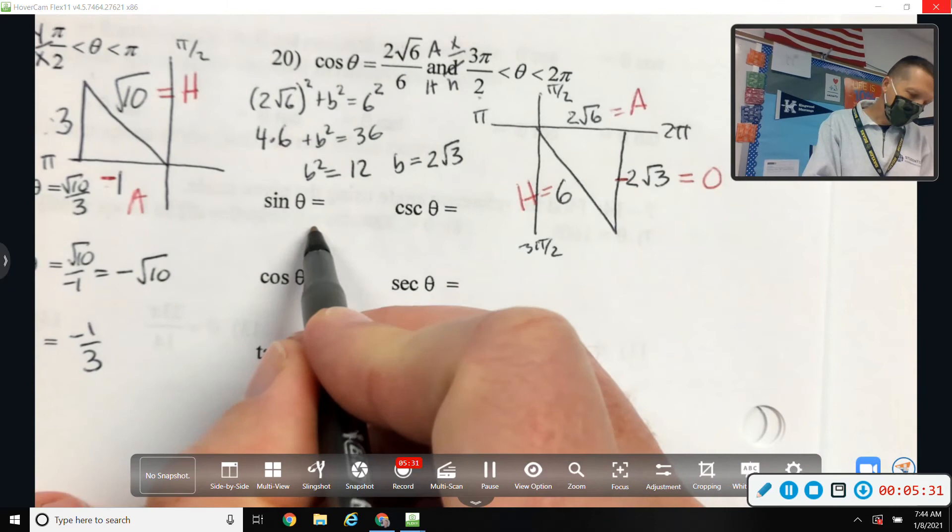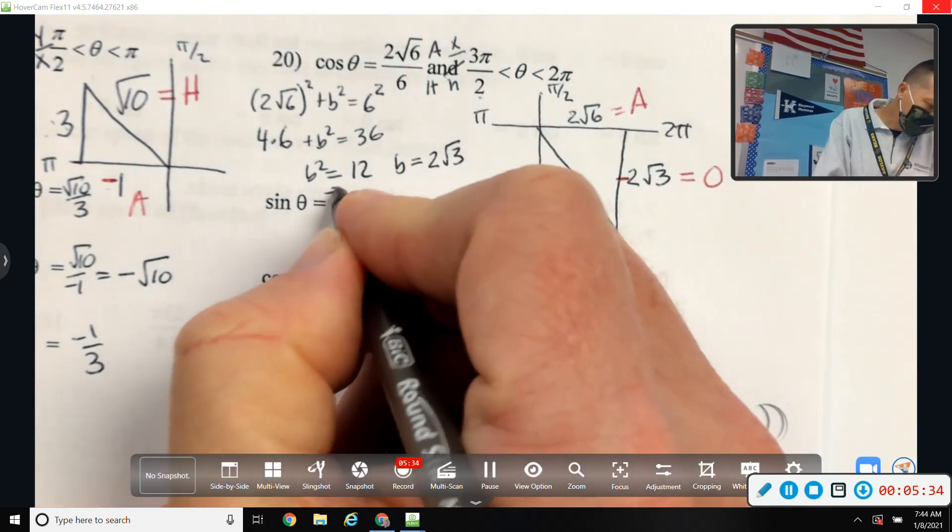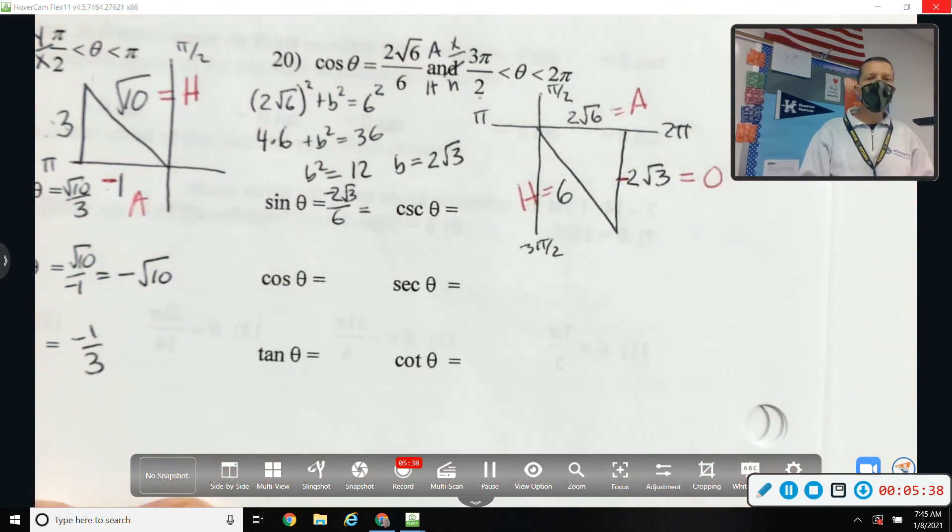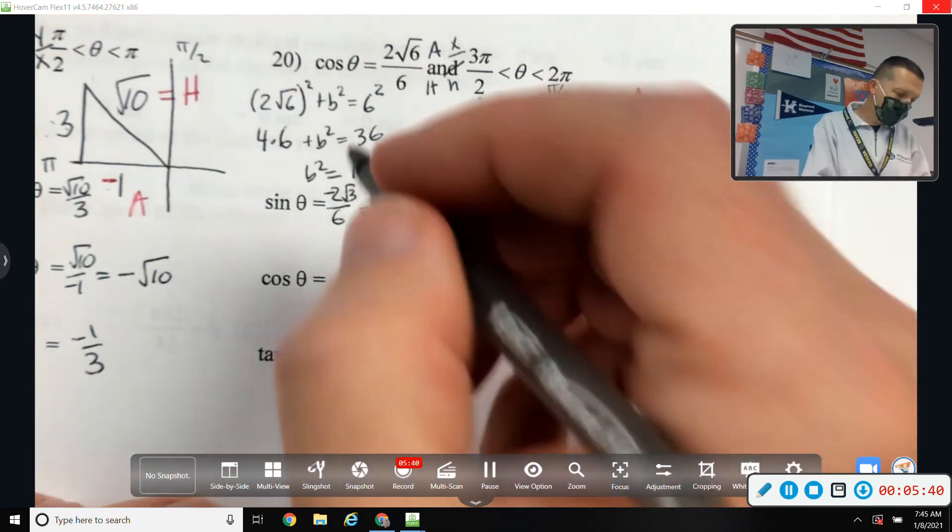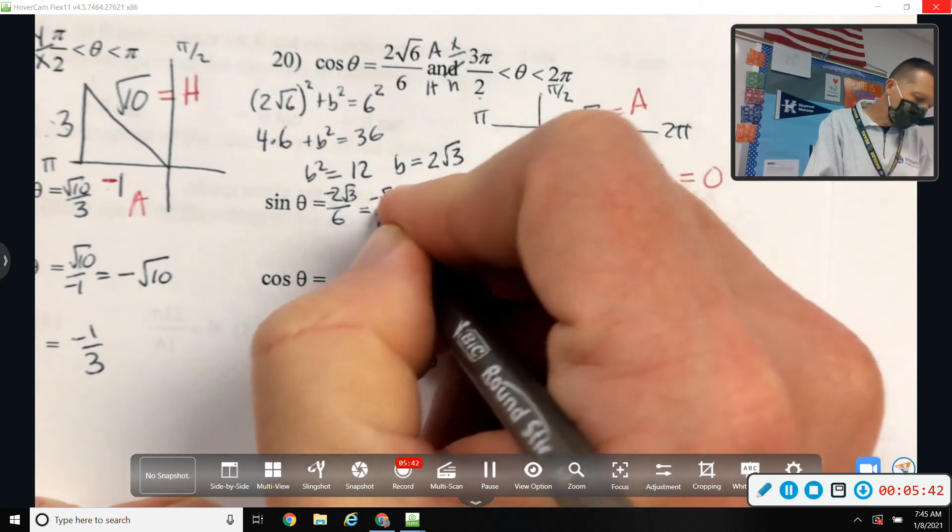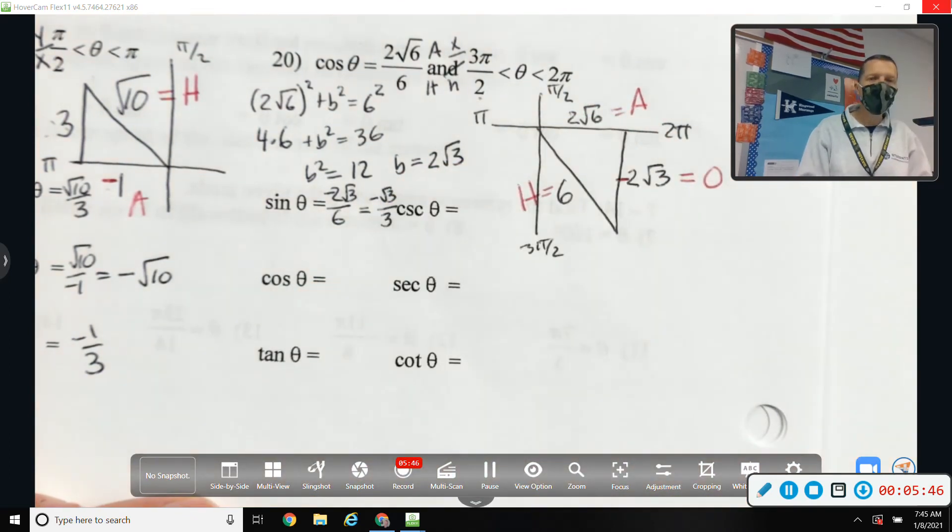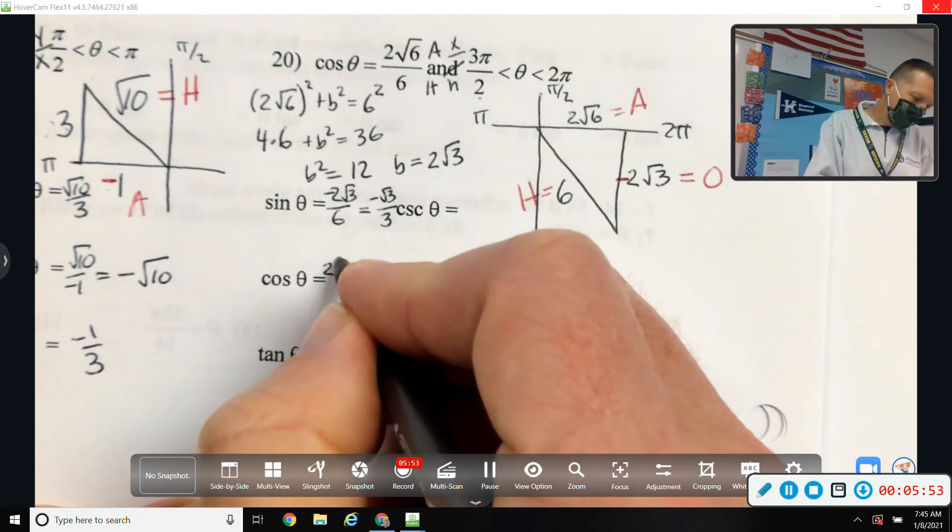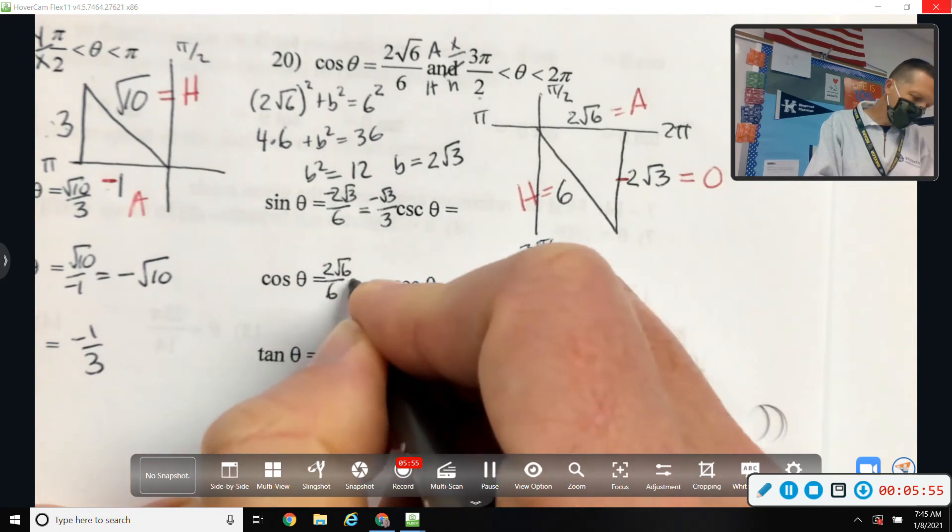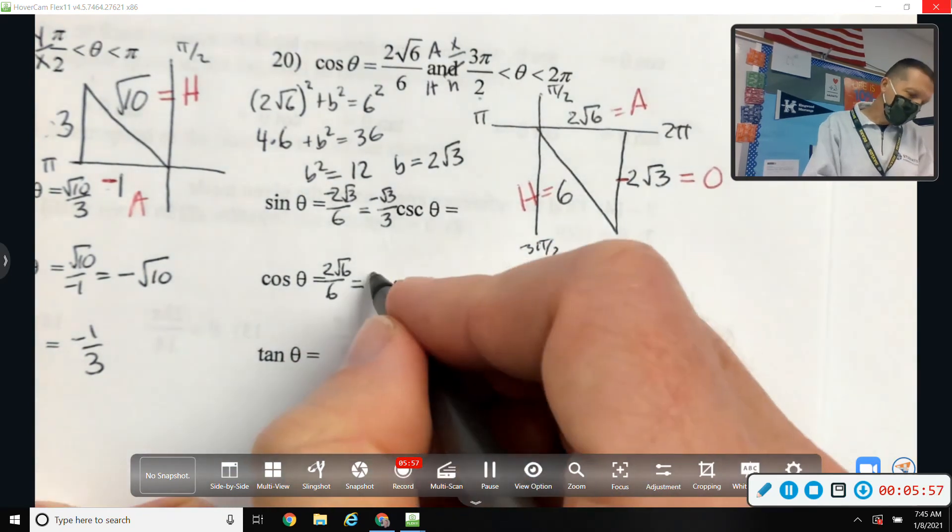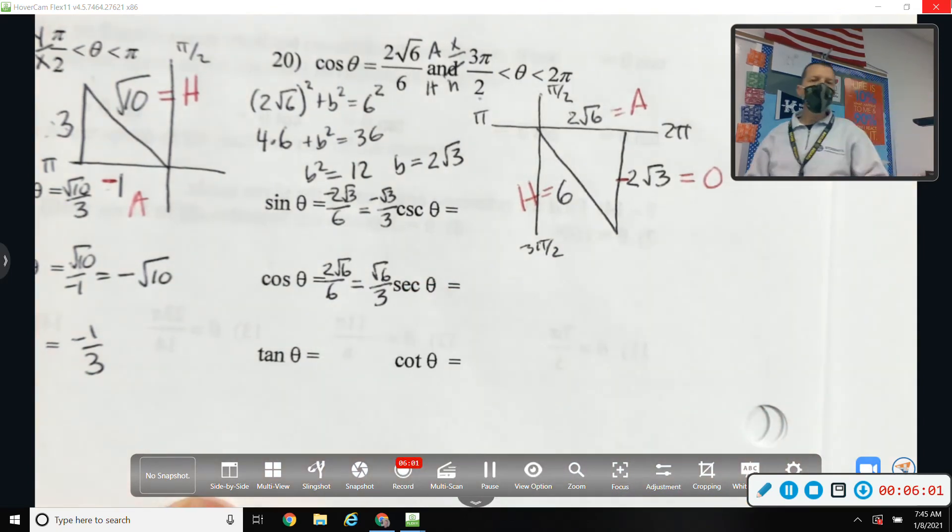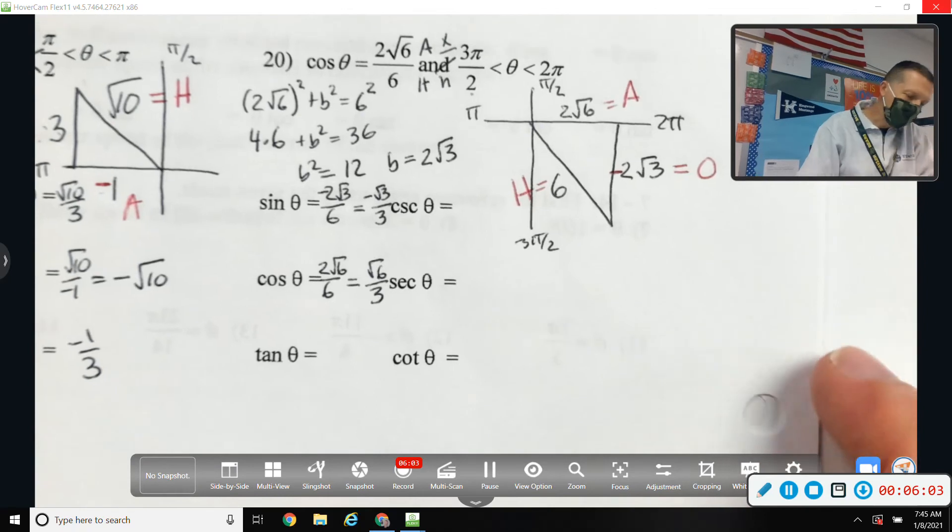So sine is opposite over hypotenuse. Negative 2 root 3 over 6. But that will reduce. So negative root 3 over 3. Cosine is adjacent over hypotenuse. 2 square root 6 over 6. That will reduce. Square root of 6 over 3.